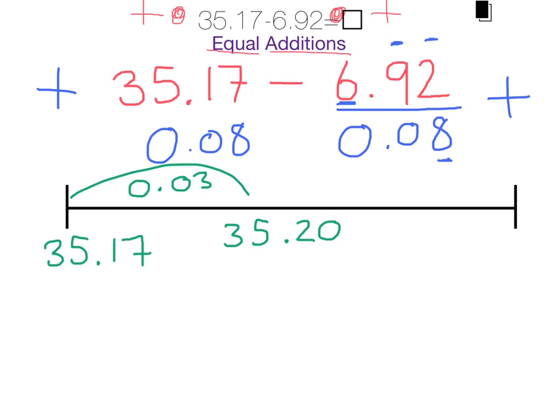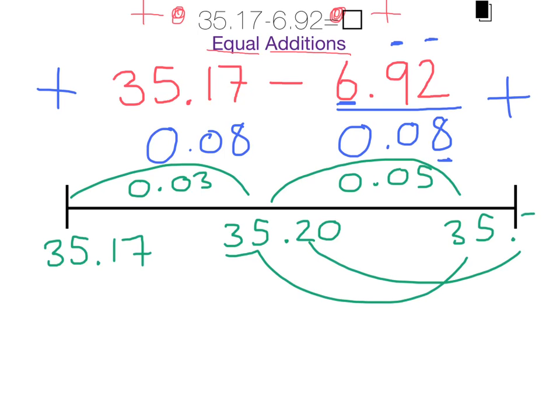Now to make sure I add the full 0.08, I now need to add on a further 0.05, which will get me to 35.25.